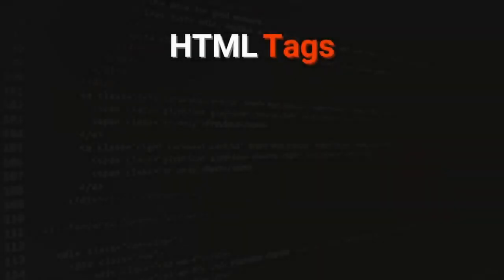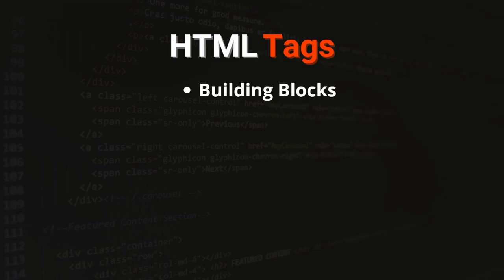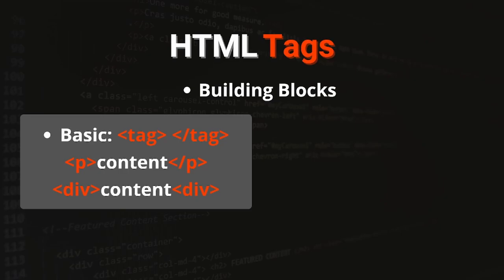Let's jump back to our slides and talk about HTML tags. HTML tags are basically the building blocks that we are going to use to structure our website. There are two types of tags. There is the basic tag — the format has angled brackets, then inside that the tag name, then another angled bracket with a forward slash at the start, then the tag name again. Examples are a paragraph tag with content or a div tag with content.